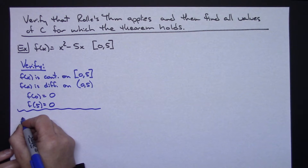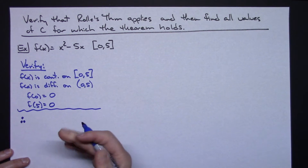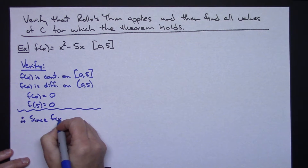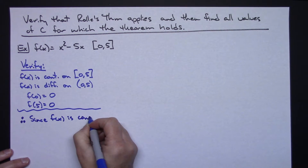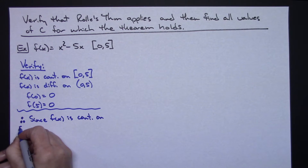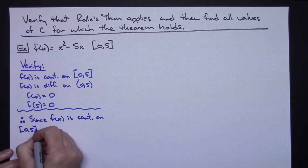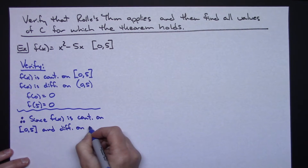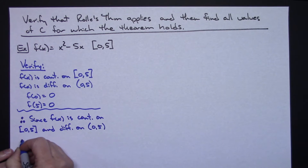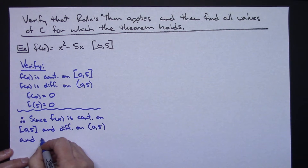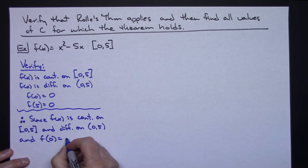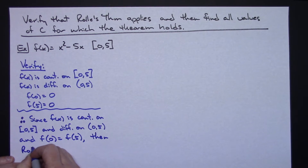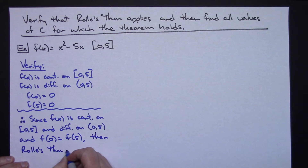Let's do a therefore statement to draw a conclusion. Since F of x is continuous on the closed interval from 0 to 5, and differentiable on the open interval from 0 to 5, and since F of 0 is equal to F of 5, then Rolle's Theorem applies.